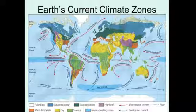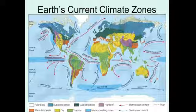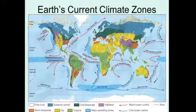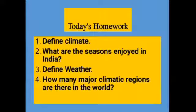Here is a map showing the Earth's current climate zones. There are eight climate zones: polar, sub-arctic, cool temperate, highland, warm temperate, dry, tropical, and measuring/dwelling zones. The red arrows indicate warm ocean currents, whereas the blue arrows indicate cold ocean currents.